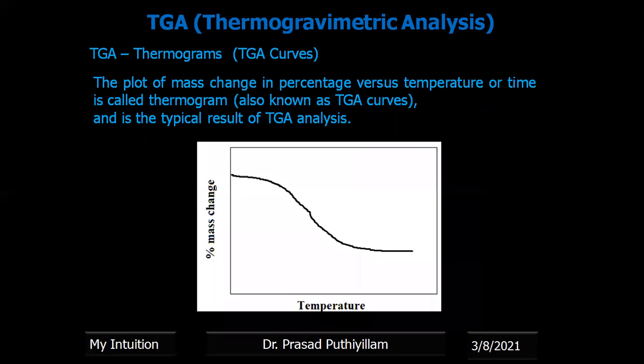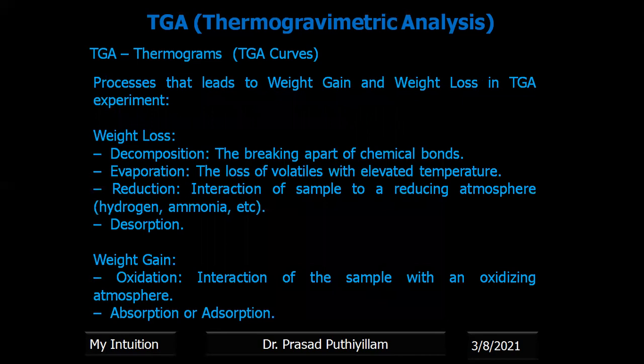TGA thermograms, also called TGA curves, are the plot of mass change in percentage versus temperature or time, and represent the typical result of a TGA analysis. Weight loss may be due to decomposition, evaporation, reduction or desorption. Whereas the sample will gain weight when it undergoes oxidation with the surrounding atmosphere or when it absorbs or adsorbs some molecules.